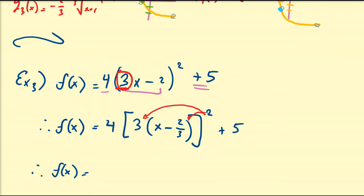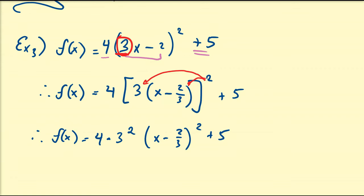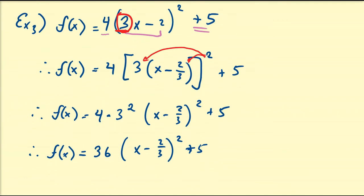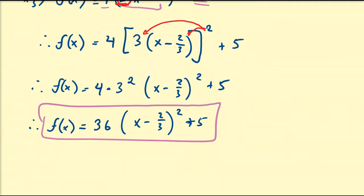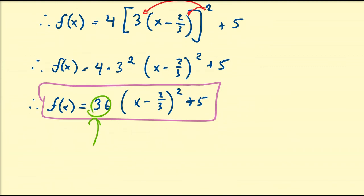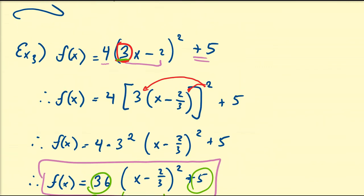Now we can apply the square to both terms: f(x) = 4 · 3² · (x - 2/3)² + 5. Since 3² = 9 and 9 × 4 = 36, we get f(x) = 36(x - 2/3)² + 5. This form is easier to interpret: 36 is the compression factor, we're shifting to the right 2/3 units, and shifting up 5 units — that last part didn't change from the original.